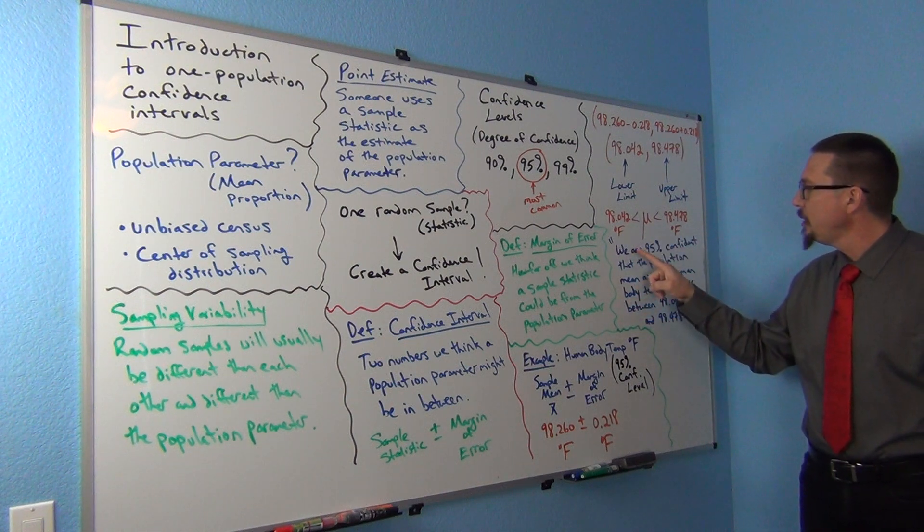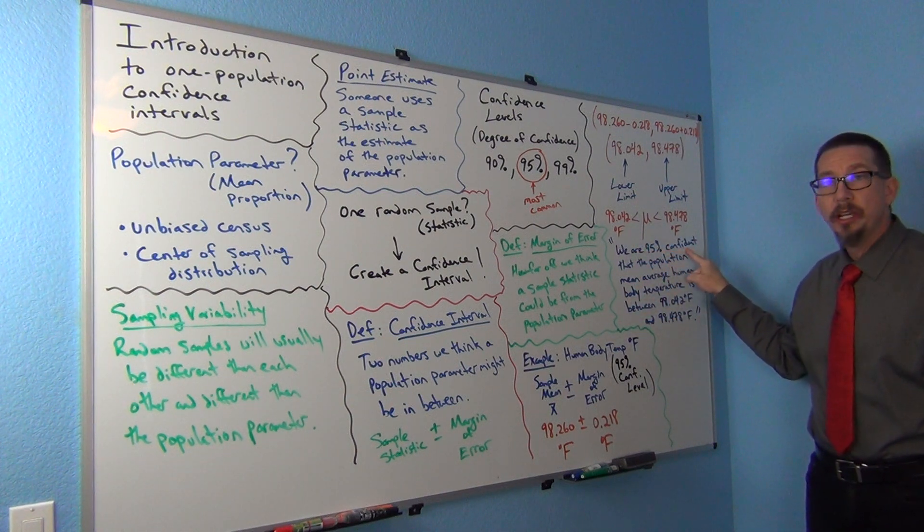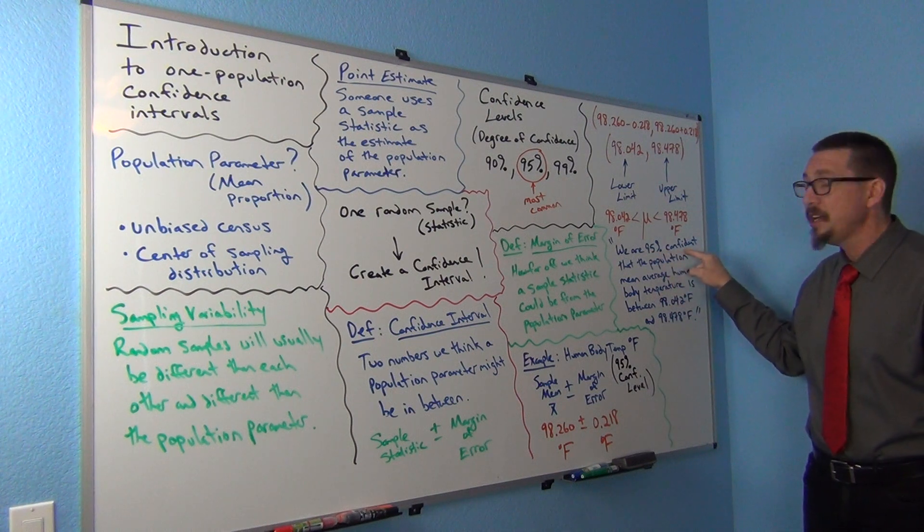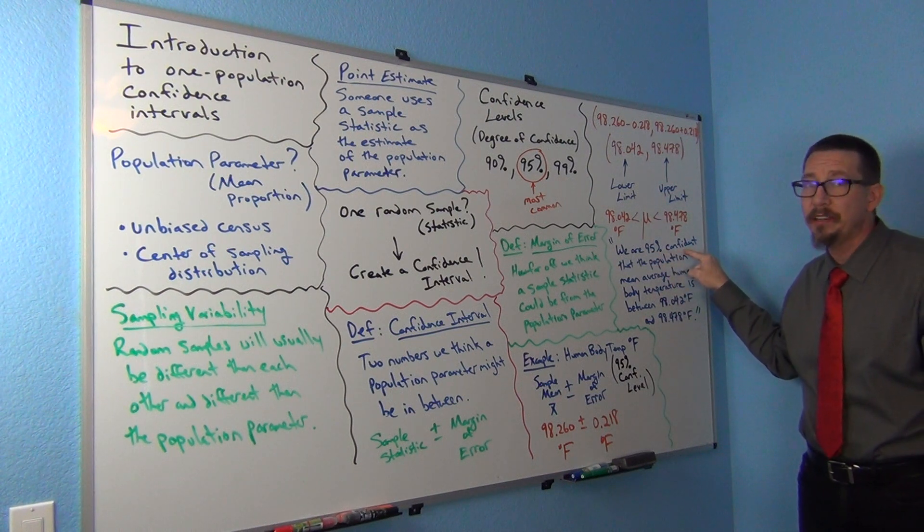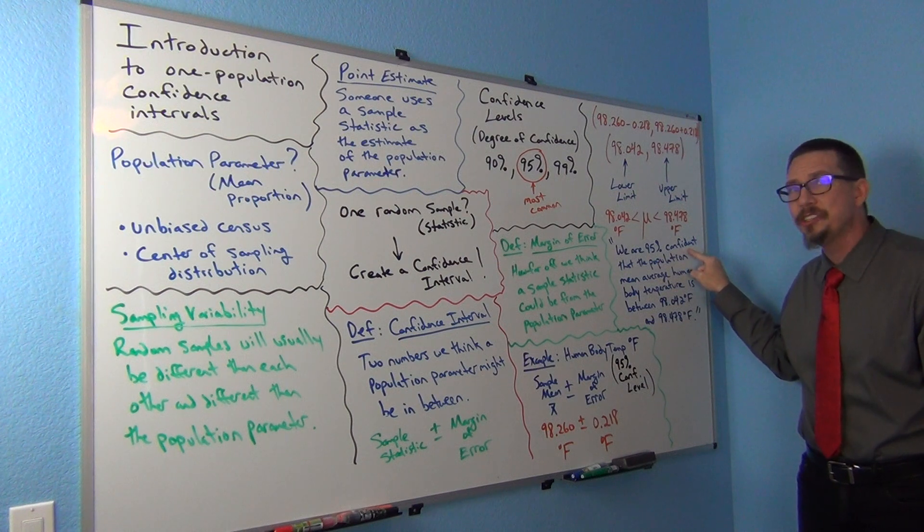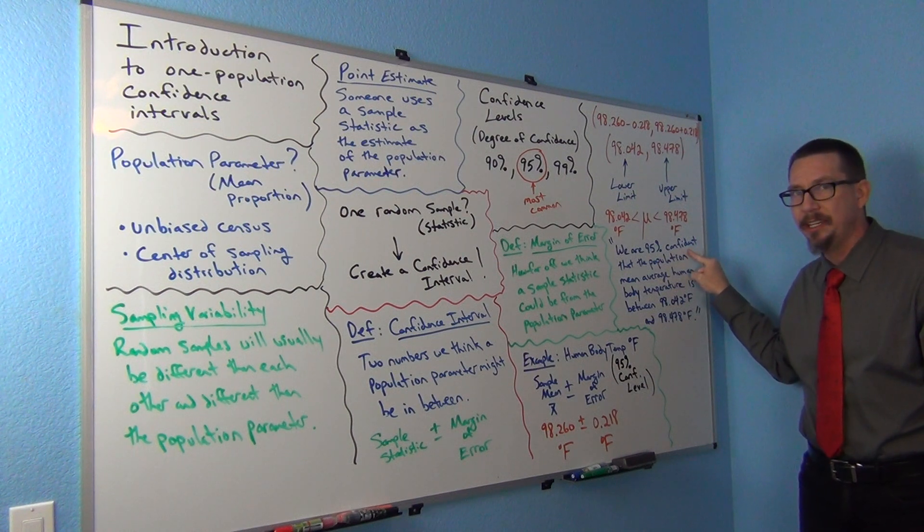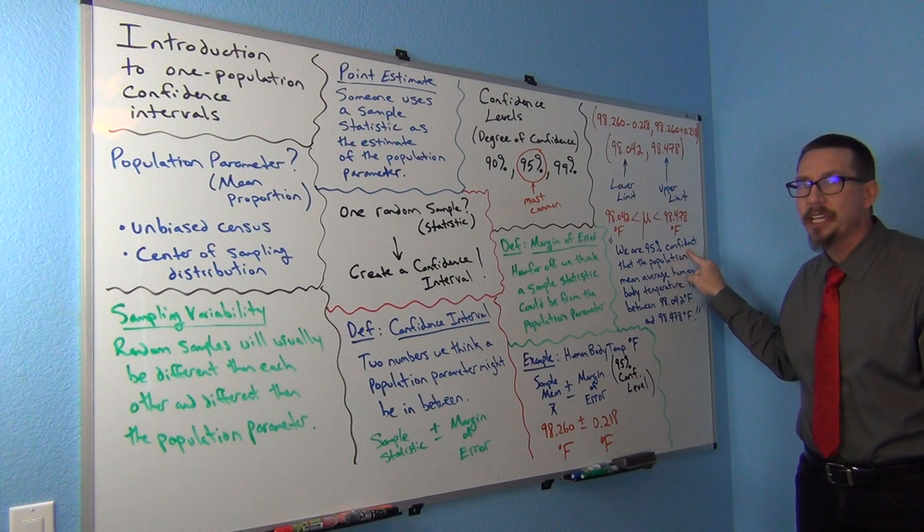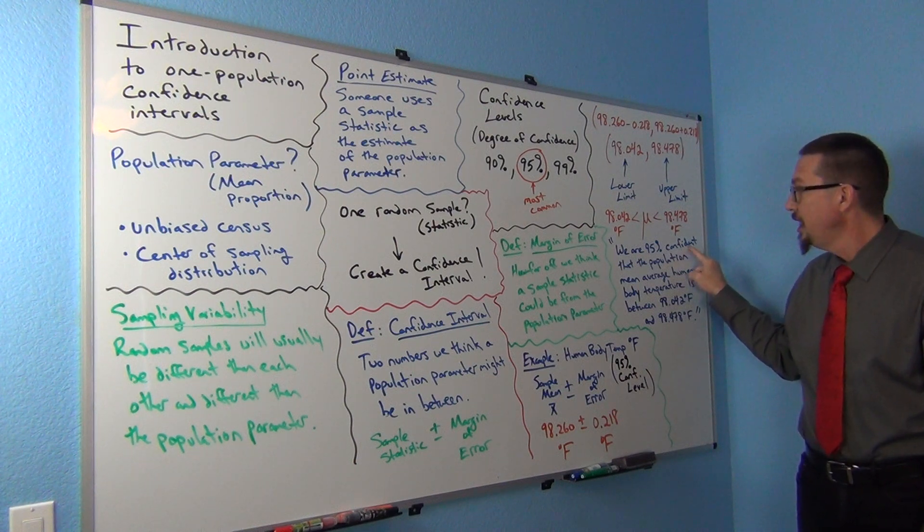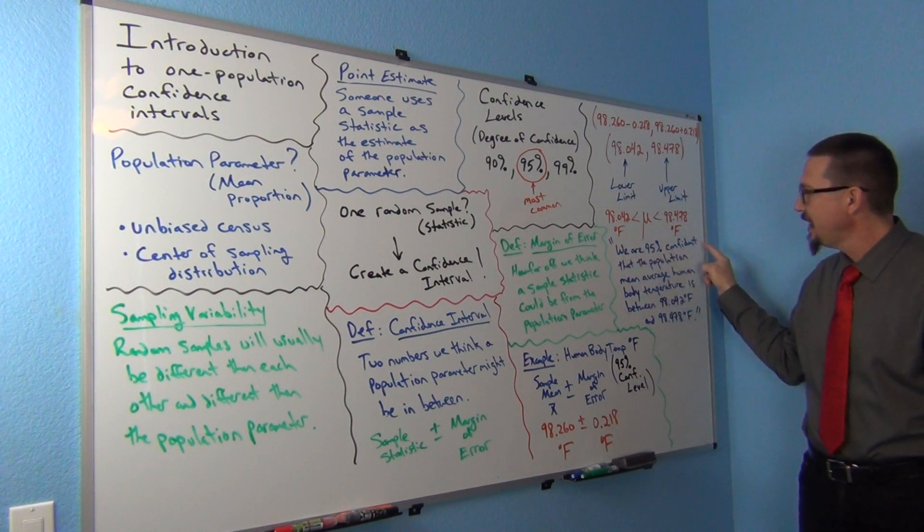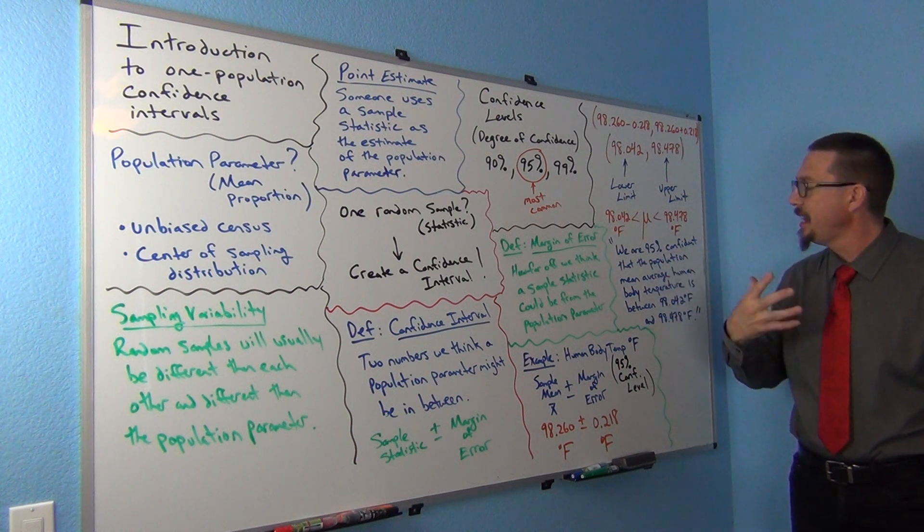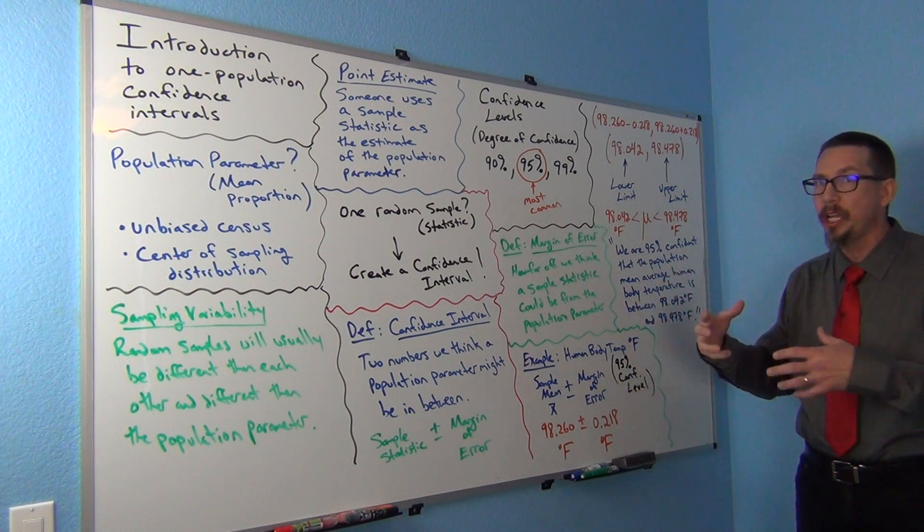Notice I didn't say we are 95% sure, I said we are 95% confident. That's not a subjective confidence, that's telling statisticians how it was calculated - that I used a 95% confidence level in the calculation. Don't overlook this part of the sentence. Always write it, always say I am 95% confident or we are 95% confident. That's an important part of the sentence.